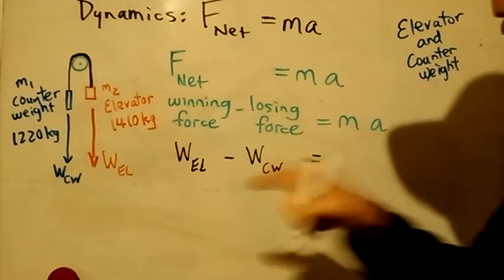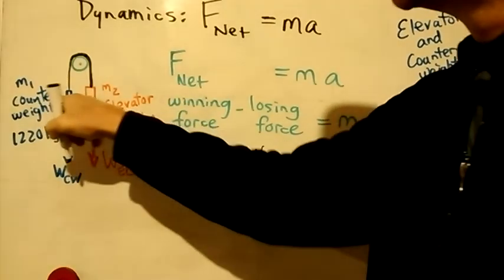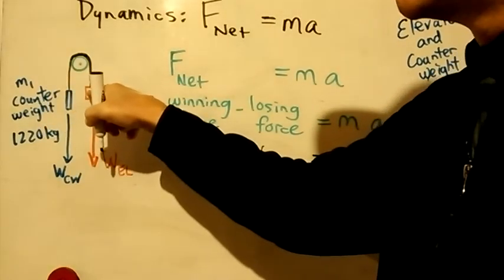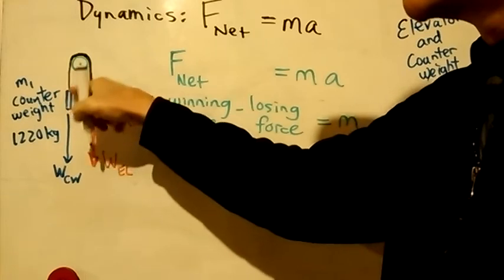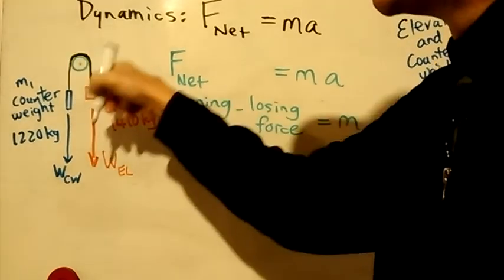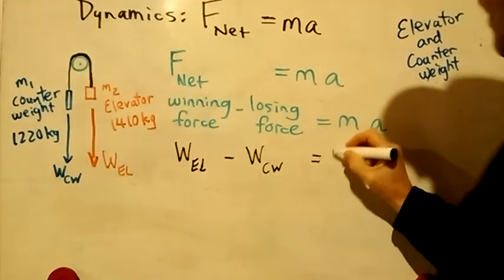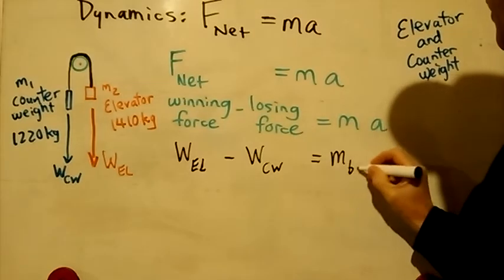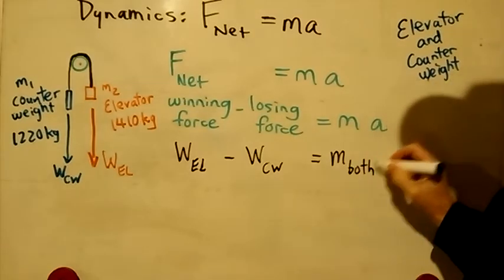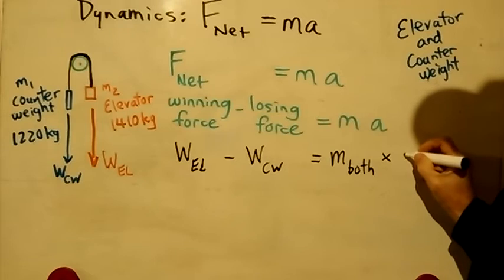But there's two things moving this time, not just the elevator. It's also attached to the counterweight and a massless cable. So we really have to have both masses together, because they're both moving. And then that's times acceleration.